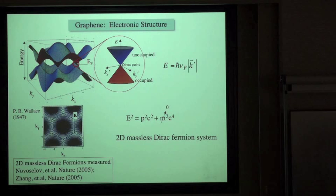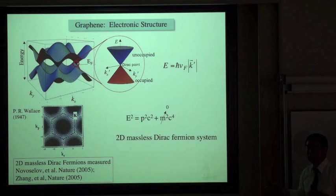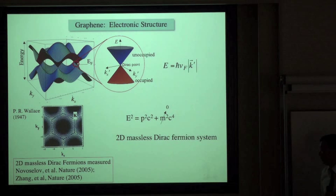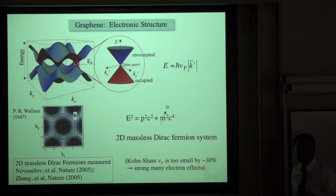This band structure of graphene has been known since 1947, and the carbon nanotube community has used it to understand many nanotube properties. However, isolation of a single layer graphene was not achieved until about five years ago. When you do a standard DFT calculation, the band velocity is only 0.85 × 10⁶ m/s — too small by 30% compared to experiment — due to very strong many-electron effects in this low-dimensional system.